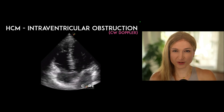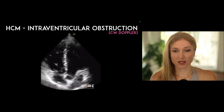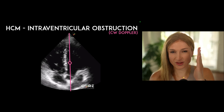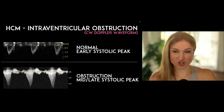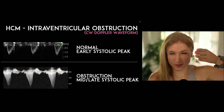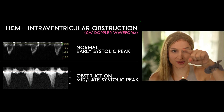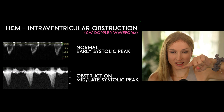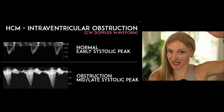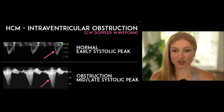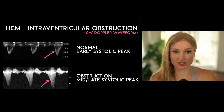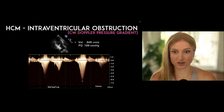Another way we can look for this is to look for flow through the LVOT. We would place continuous wave Doppler right through that LVOT using our apical five-chamber view and identify the waveform. We should see a brisk uptake and then a slower downtick in velocity. But in patients with obstruction, you're going to have a later peak — it's going to look like a shark fin. That's how you can diagnose it using continuous wave Doppler.